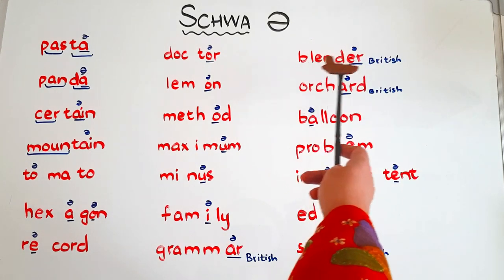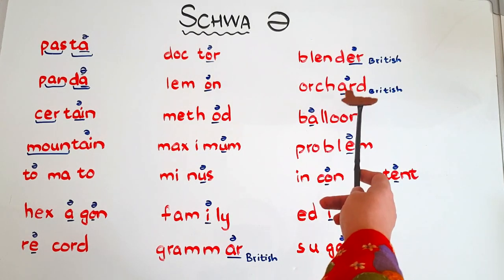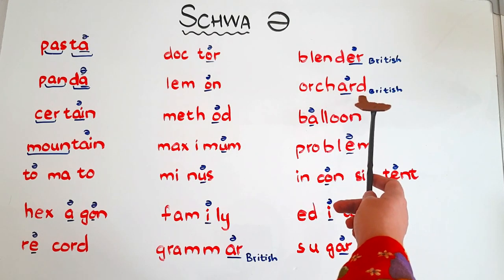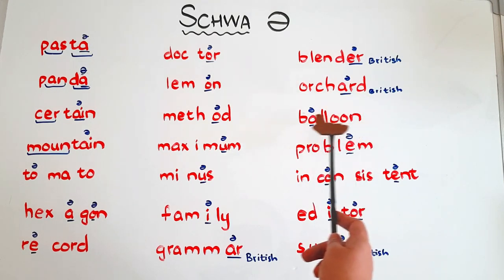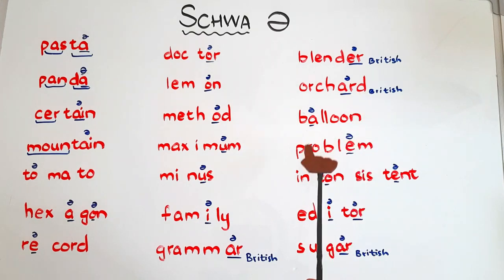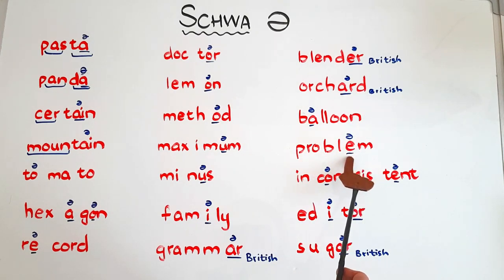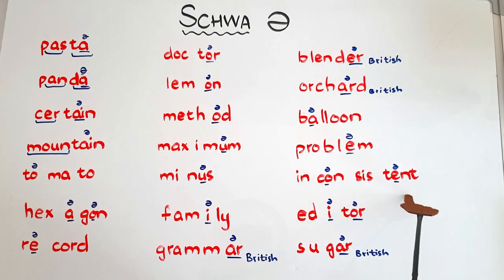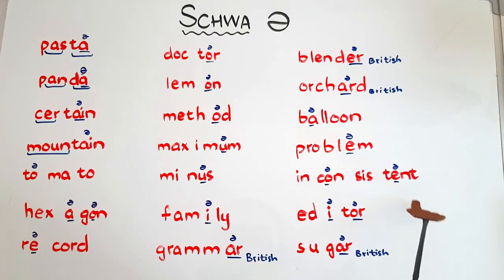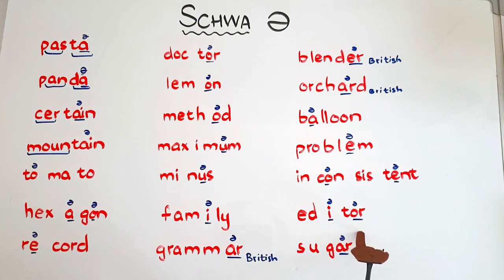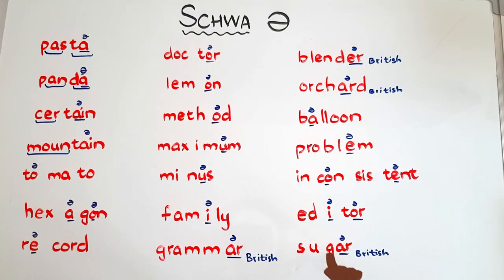The next words are 'blender' or 'blender,' 'orchard' or 'orchard,' 'balloon' — the 'u' is schwa, 'problem' — the 'e' is saying the schwa sound, 'inconsistent' — here 'o' and 'e' are saying the schwa sound, 'editor,' and the last one is 'sugar' — in British English 'sugar' and in American English 'sugar.'